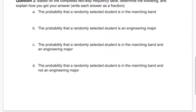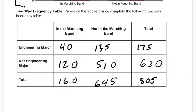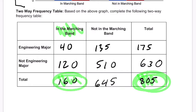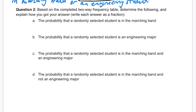The first probability: a randomly selected student is in the marching band. Looking at the column heading for marching band, there are 160 students in marching band out of 805 total students. When they say randomly selected student, it's always out of the total. So it's 160 out of 805, which is about 0.199.